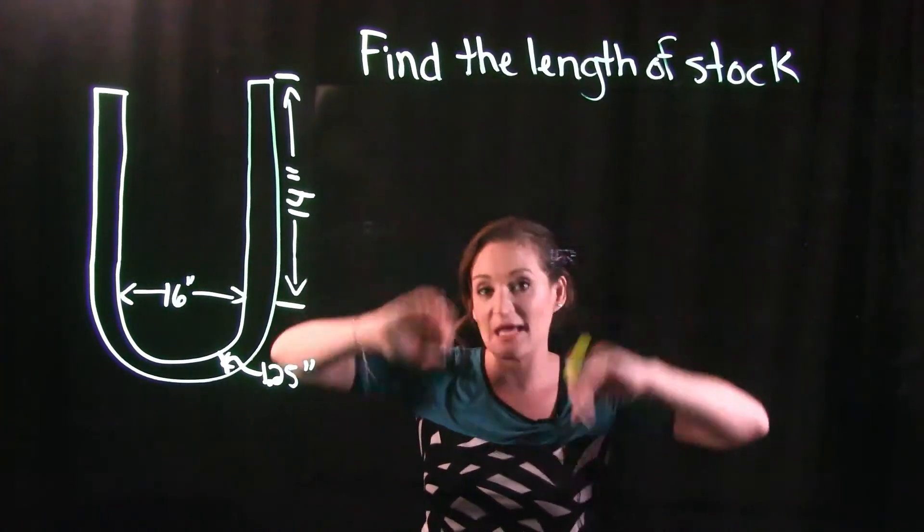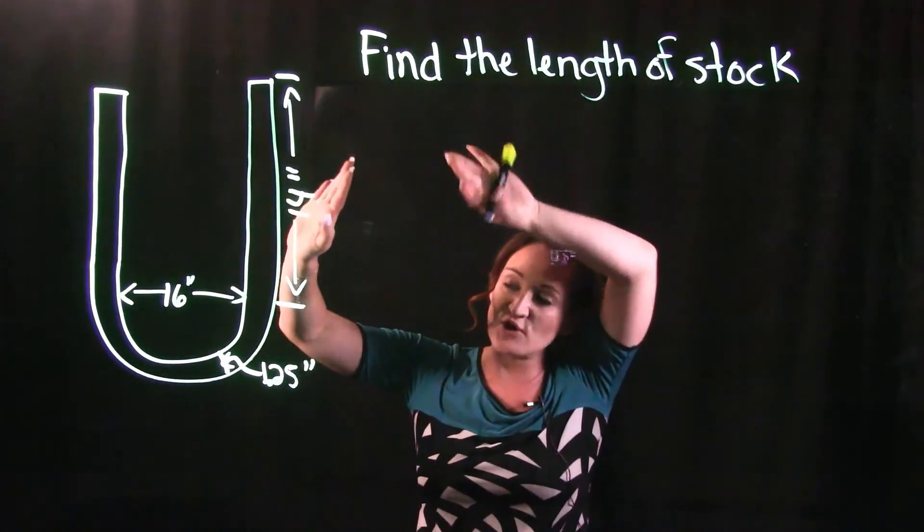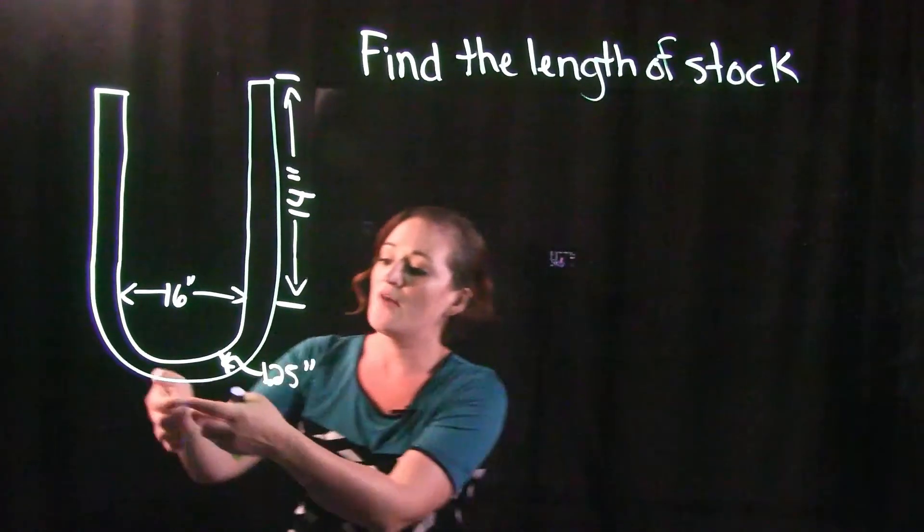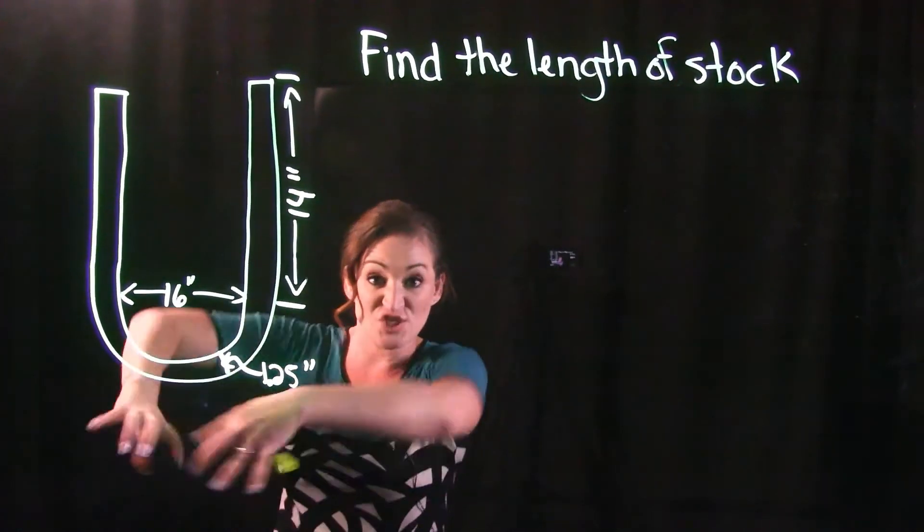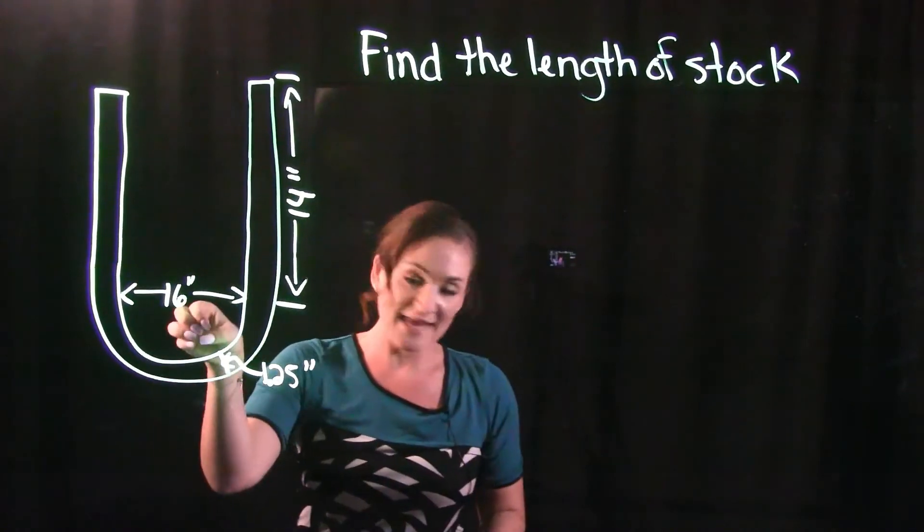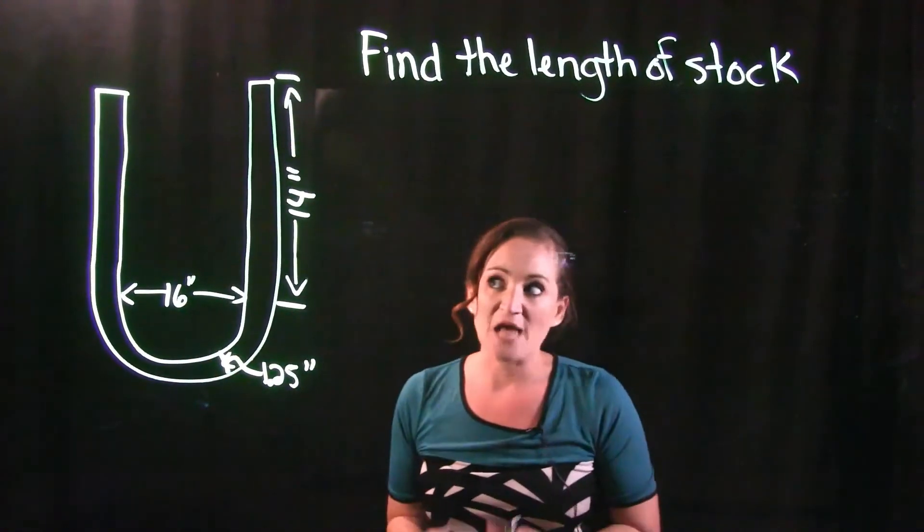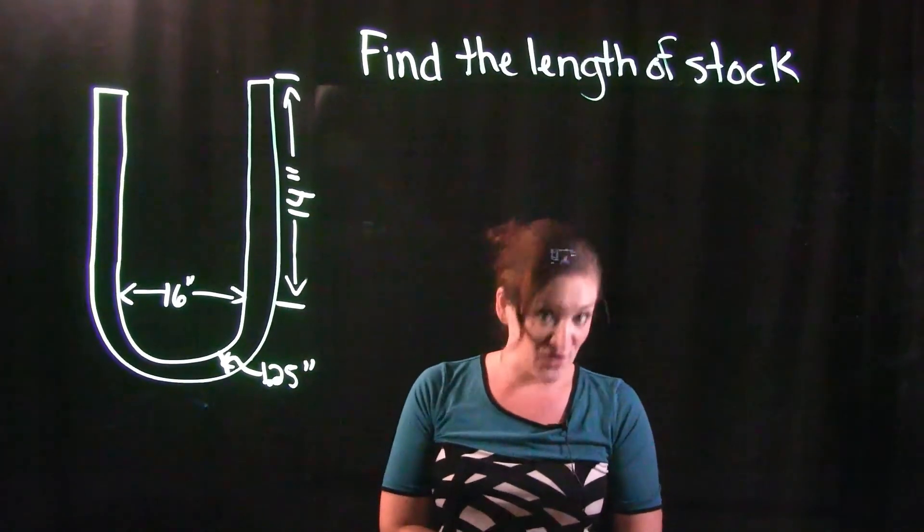When you bend it in a circular fashion like this, there's some things that happen to the board. On the outside edge over here it's kind of stretching it, whereas on the inside of it over here it's kind of compressing it. So we need to factor that in as we're finding the length of this piece here.